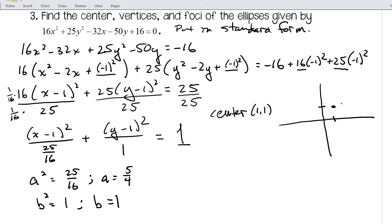And I already figured out it's going to be horizontal because a is under my x's. So to get to my vertices I'm going to go to the left and to the right. This is 1.25, so for my vertices I have to go 1.25 from my x value. So that's going to be 1 + 1.25, so that's 2.25, 1. And I'm going to go 1.25 to the left, that'll put me at -0.25, 1. So there's my vertices.